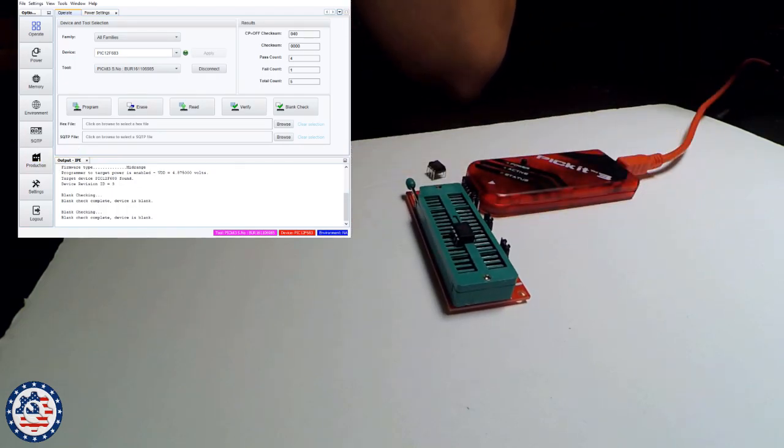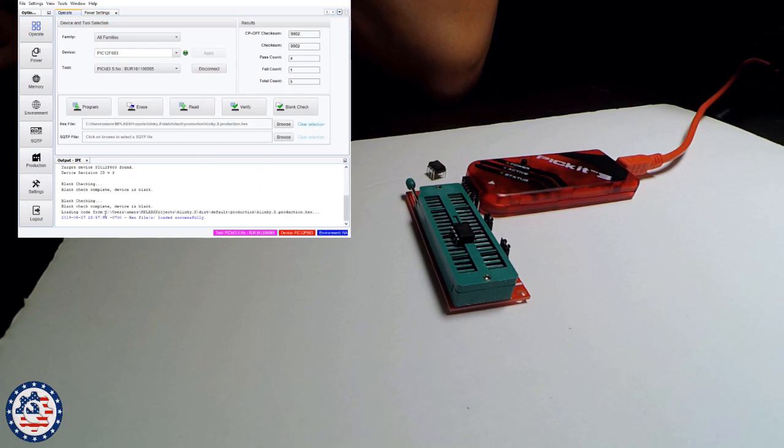And for that, I need to go and file import hex file. I have this blinky. It's a blink firmware. So I'm going to go ahead and open that. It says loading from there. Hex file loaded successfully.